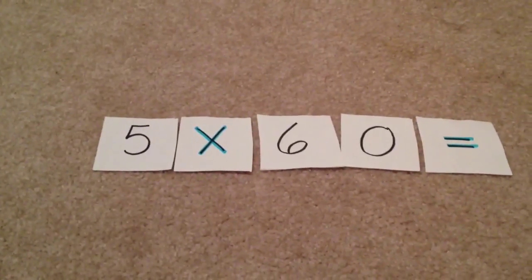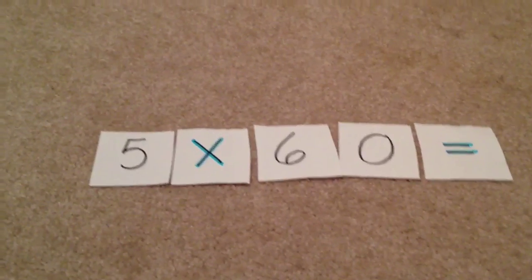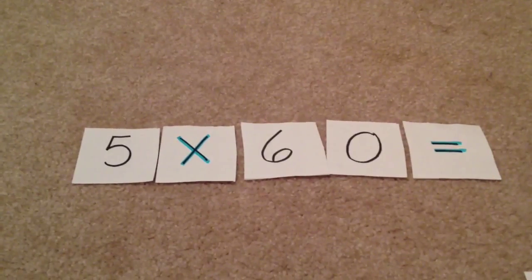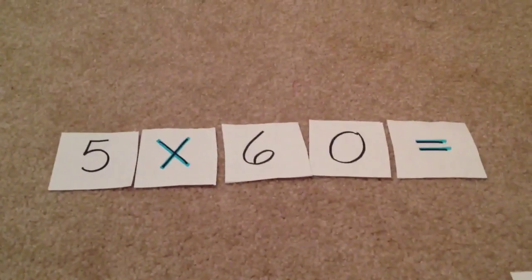Questions such as this one, 5 times 60, are really easy to do if you just simplify the question first and then add the zeros back later.